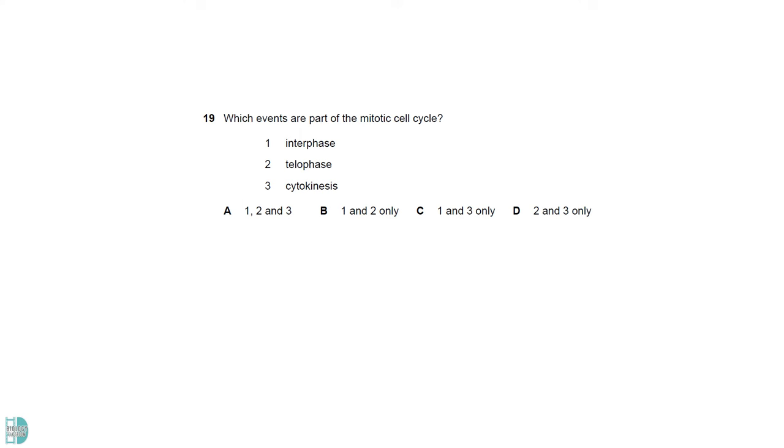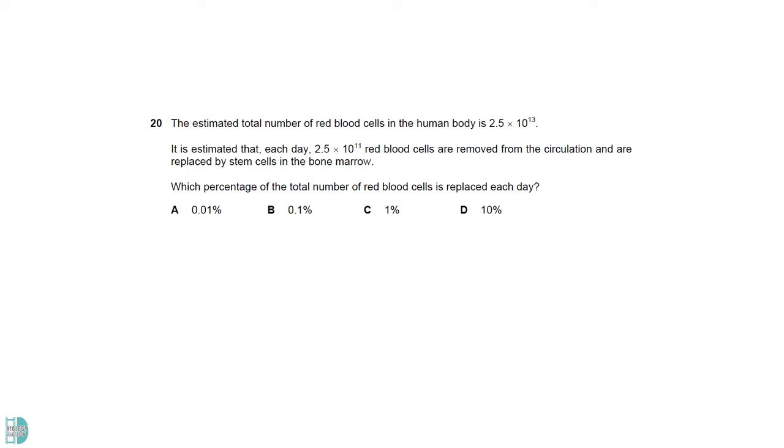The mitotic cell cycle includes interphase, mitosis and cytokinesis. Note that the term cell cycle includes all three, but the term mitosis excludes interphase and cytokinesis. The number of cells replaced divided by the total number of cells times 100 will give you the percentage, which is 1%.